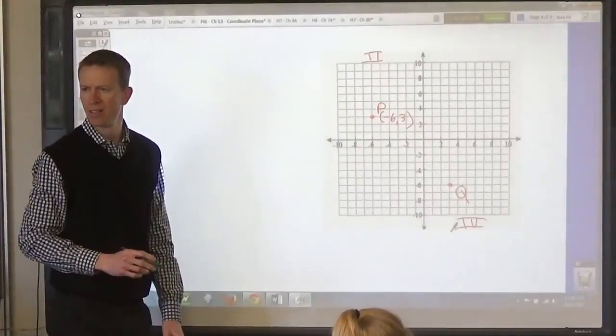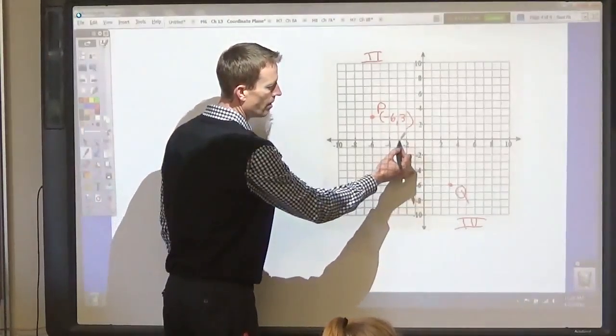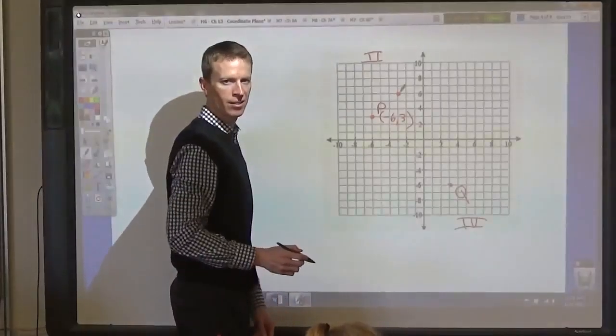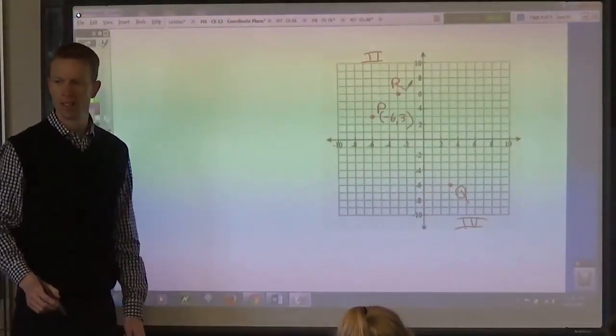Next one. Ava? Negative 3, 6. What point is that? R. Quadrant 2.